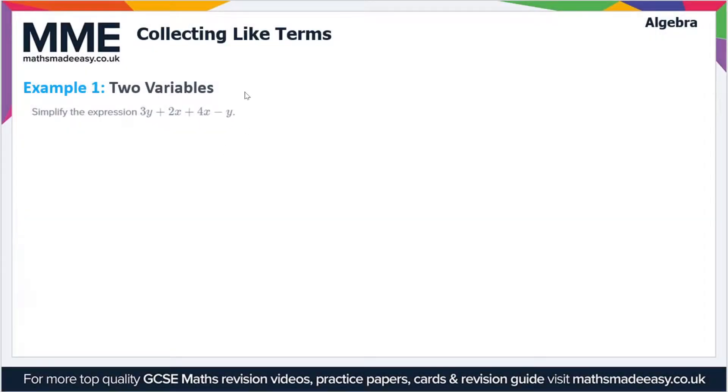Welcome to the Maths Made Easy tutorial on collecting like terms. This is the last video on this topic, we're just going to run through some example questions. Starting with this one where we have two variables at play here, we have to simplify the expression 3y plus 2x plus 4x minus y.